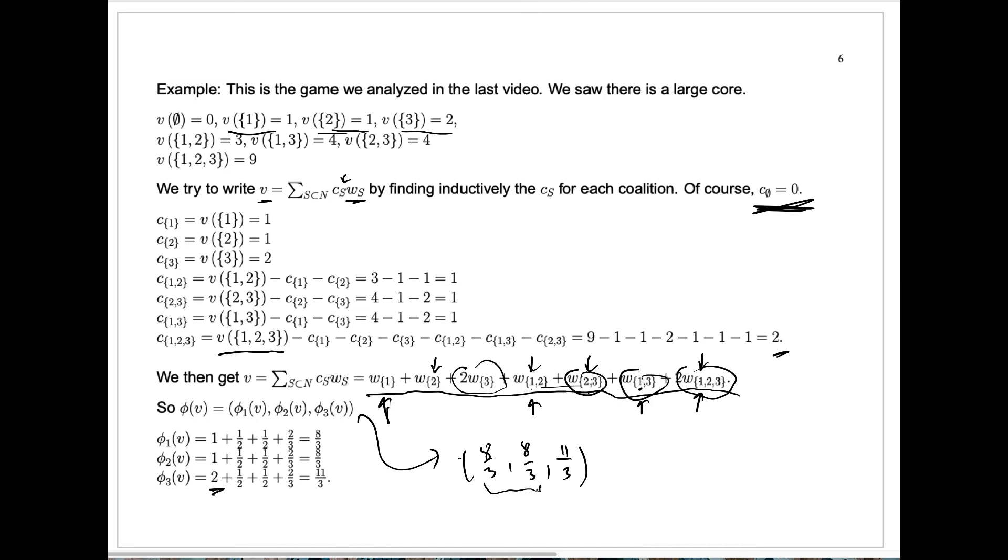And if we look at any pair, for example player 1 and player 2, 8 thirds plus 8 thirds is certainly better than the 3 they could get by themselves. For players 2 and 3, 8 thirds plus 11 thirds is better than the 4. And for player 1 and 3 similarly, 8 thirds plus 11 thirds is better than 4. And the total that they receive, 8 thirds plus 8 thirds plus 11 thirds, is 27 thirds or 9, and that's of course as it has to be exactly the value of the grand coalition.